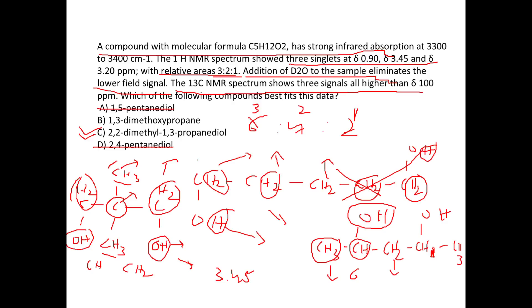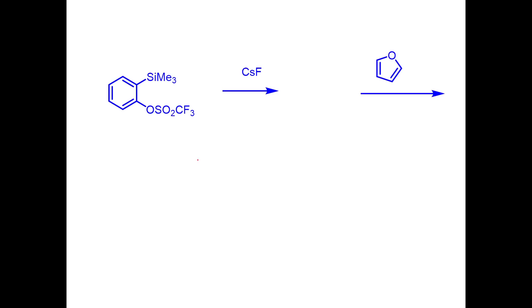Basically, my idea in explaining this question was to show you that, without all the information — with just the proton NMR alone — you can solve the question. The extra data is given to confuse you. When doing it for the first time, always try to predict the structure using the proton NMR first.